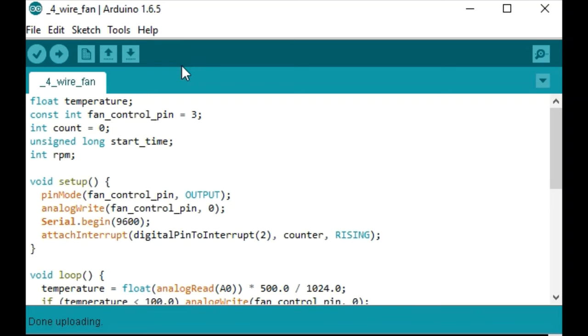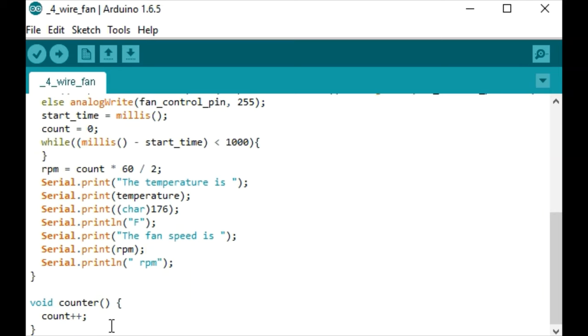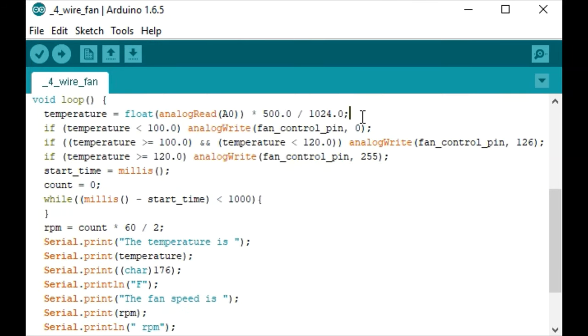For our four-wire code, we're going to add back in our temperature variable and our fan control pin. The setup loop will look very much like the other two codes. And we will continue to use our void counter. Inside the main loop, we will read the temperature using the same command that we did previously. And this time, if the temperature is below 100 degrees, we will command the fan to the slowest setting. If it's between 100 and 120, we will command it to a 50% PWM value. And if the temperature is above 120 degrees Fahrenheit, we will control it to the maximum speed. We'll also display the temperature and speed of the fan on the serial monitor.